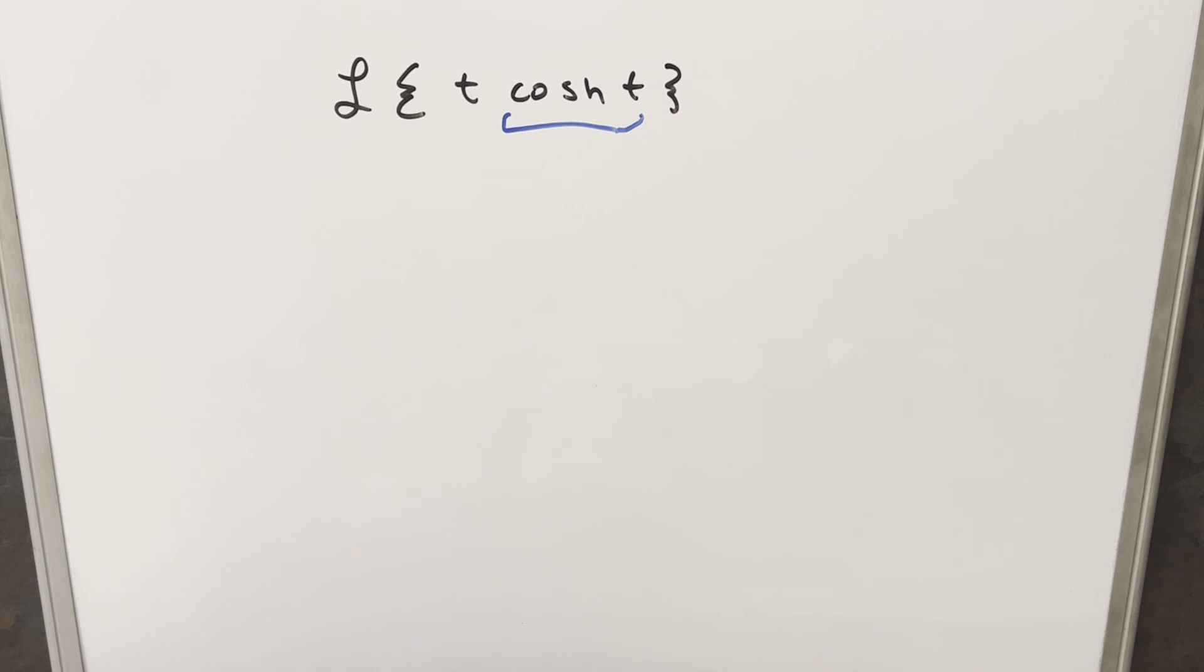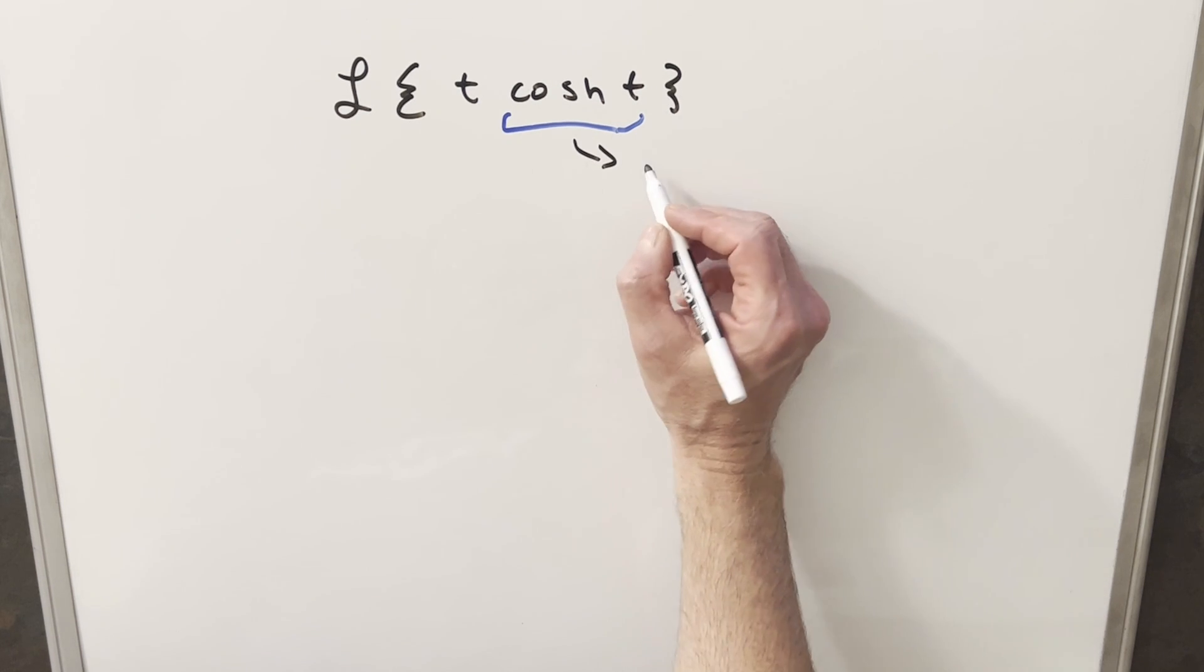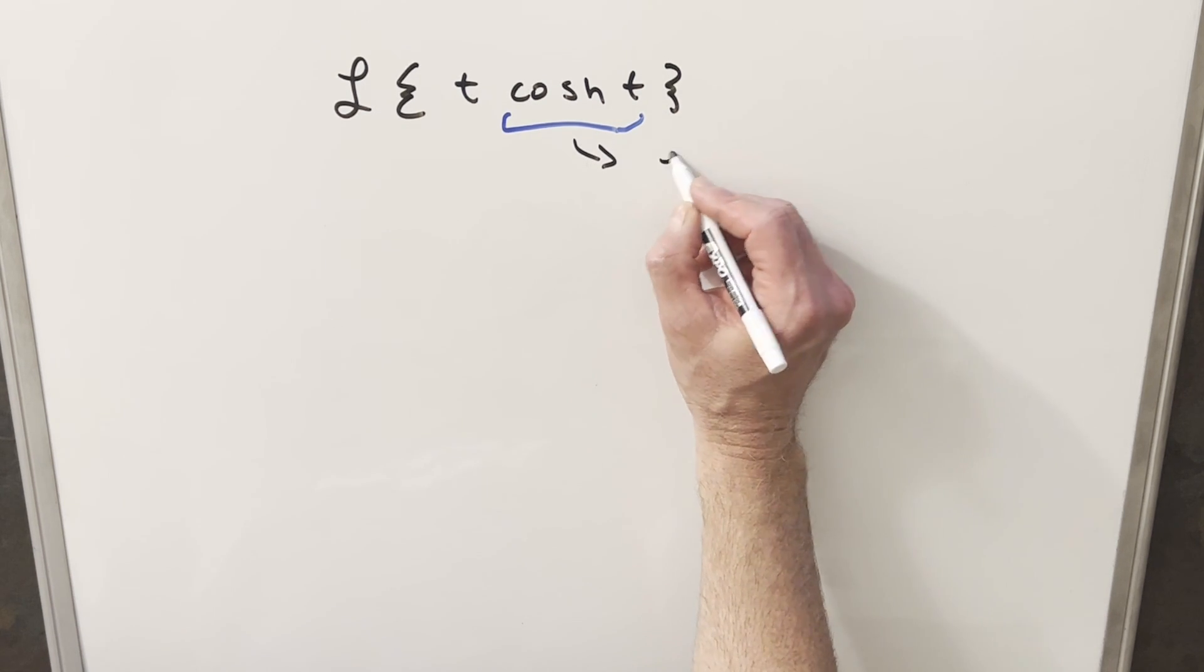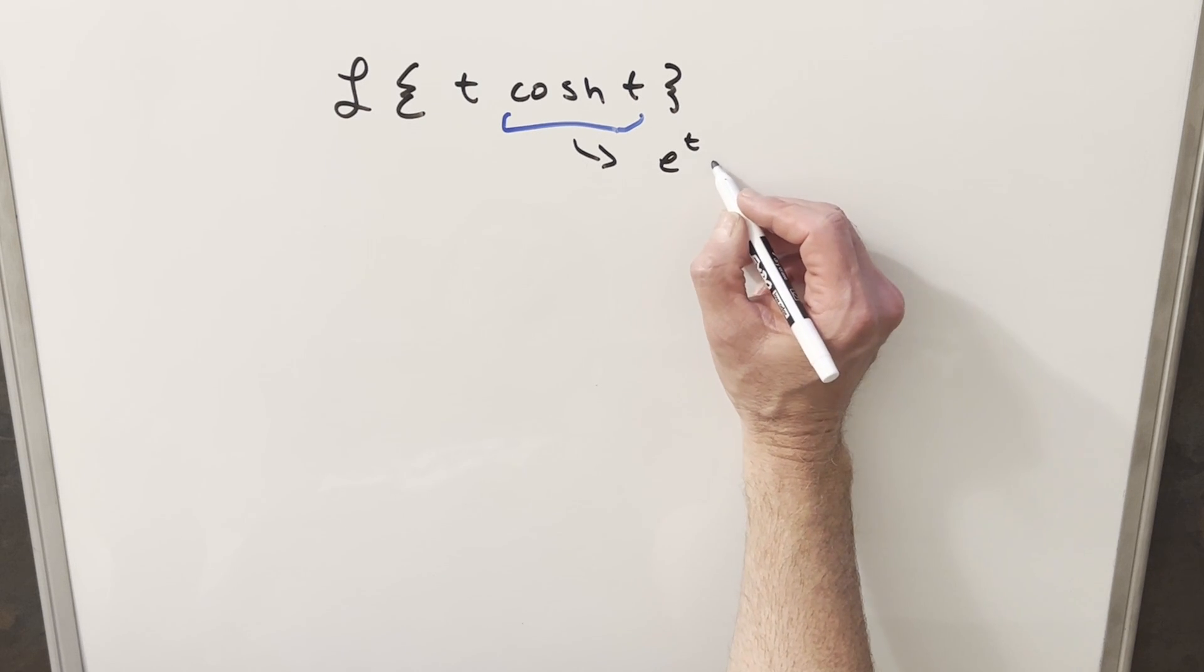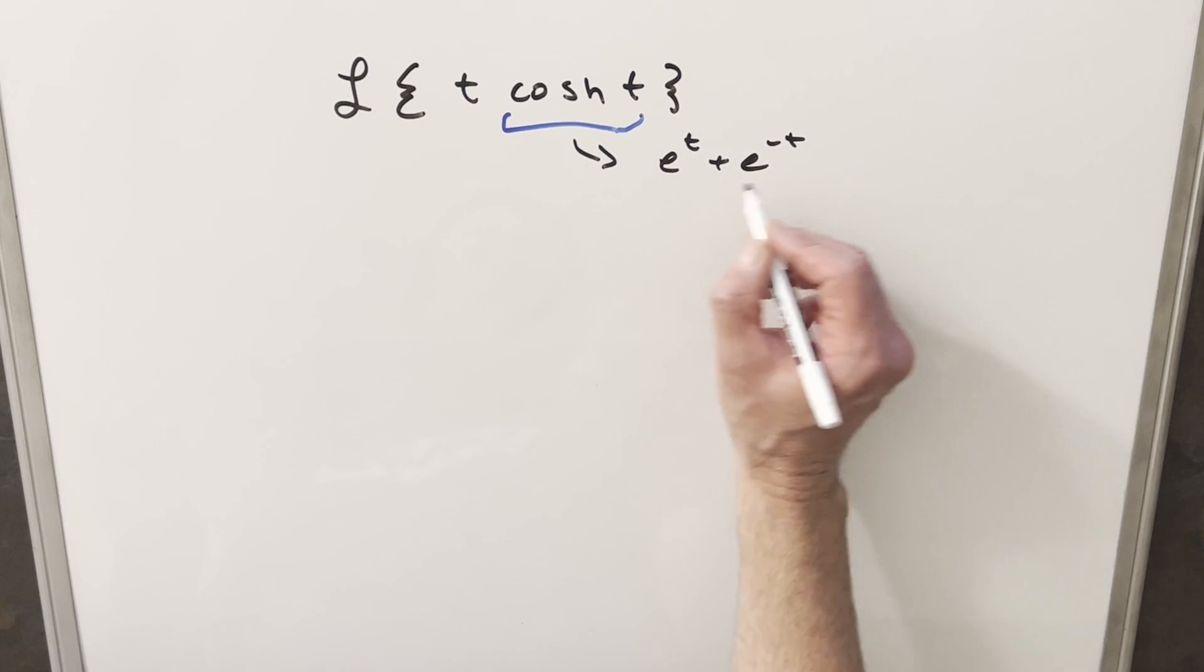What I want you to do is take cosh of t and write it out in terms of the definition of cosh, which is going to be e to the t plus e to the minus t over 2.